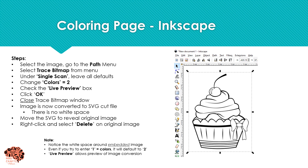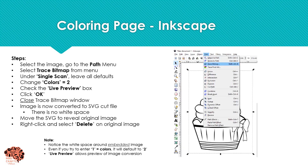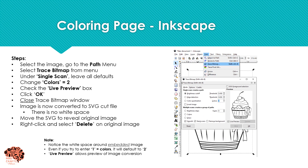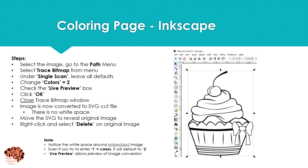From here, we're going to convert this image into a layer file. Note the white space around our embedded picture. We're going to go to Path and select Trace Bitmap. In the top portion it says Single Scan — you'll leave the defaults and change the colors to the number 2. Click on Live Preview, select OK, and then you can close your Trace Bitmap window. Even if you try selecting 1 for your color, it's going to default to 2. So close your window and now your image has been converted.